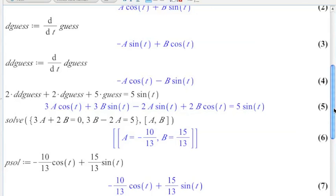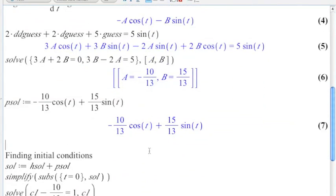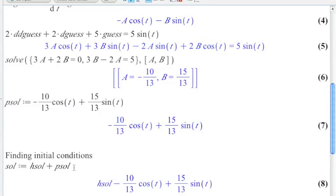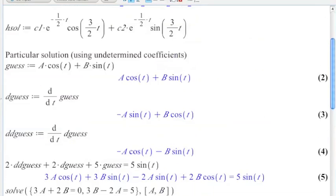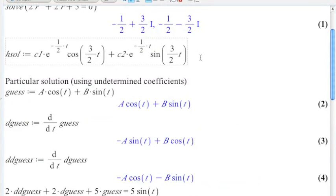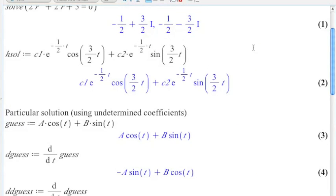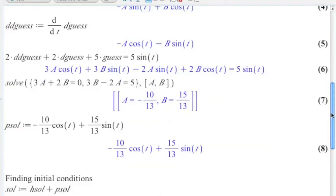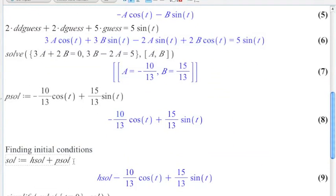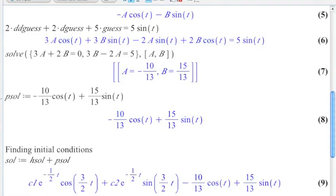All right. We've done homogeneous solutions. We've done a particular solution. Let's talk about finding the initial condition. So our total solution, when I add up the homogeneous solution plus the particular solution, is, oh, uh-oh. I forgot to hit enter up there. There's our homogeneous solution. Let's plug it in. Yay. Let's go down here. Woo! That's what our solution looks like.